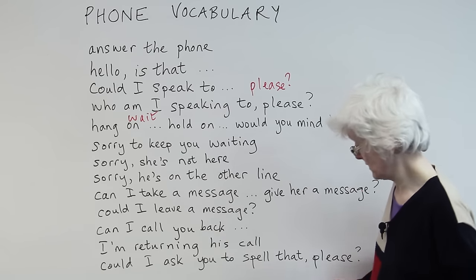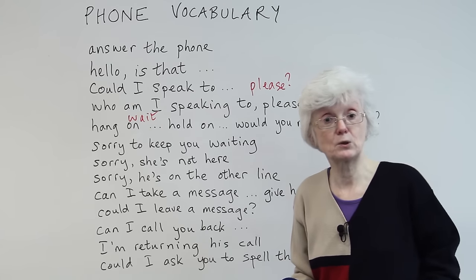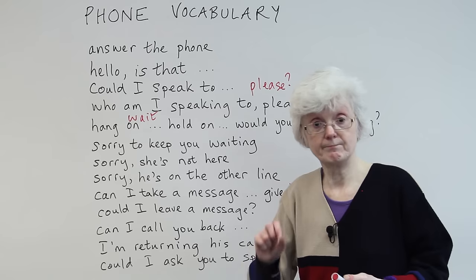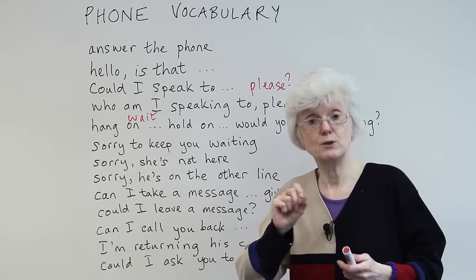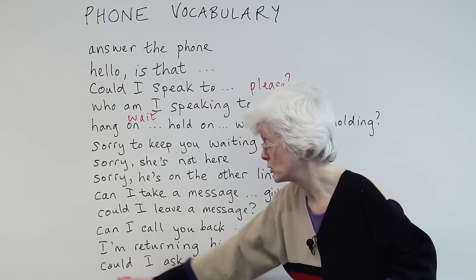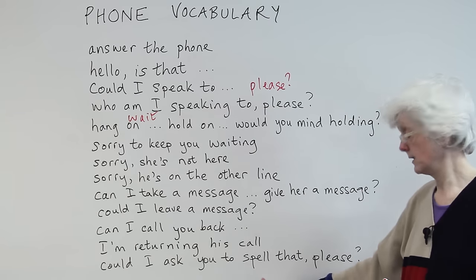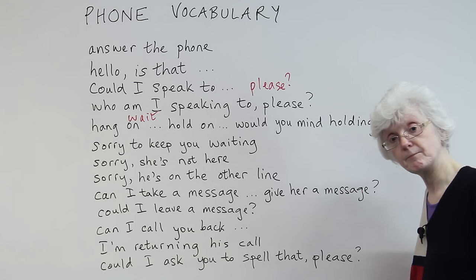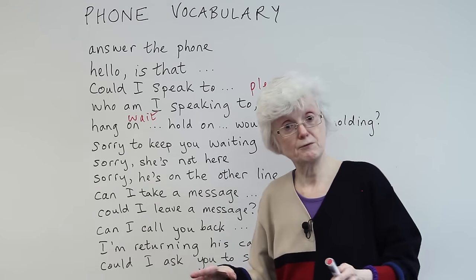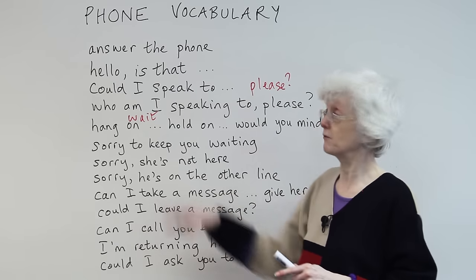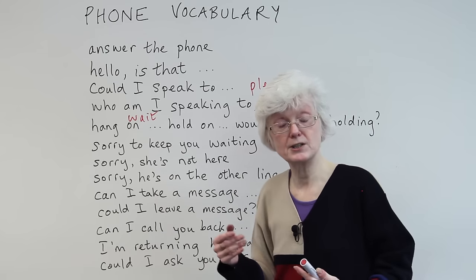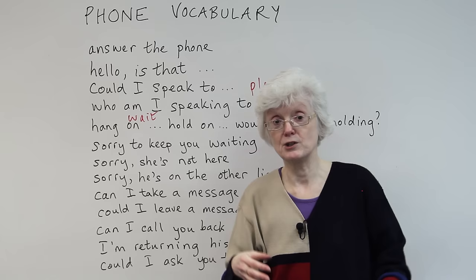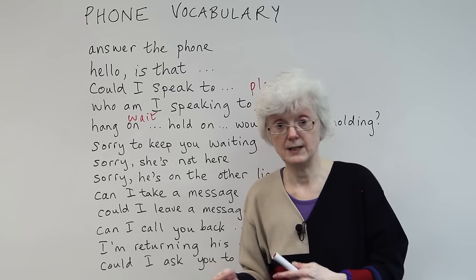Finally, in this section, sometimes people's names are difficult to spell, or place names and so on. So if you need to get a name clear and make sure you've got the right spelling, you can say — using the polite form — could I ask you to spell that, please? If it's a difficult name, could I ask you to spell that please? That's most of the main ways of speaking on the phone. We have a few more problem situations and words and phrases connected to that, so we'll do that next.